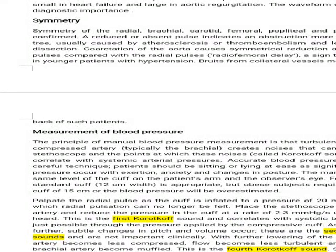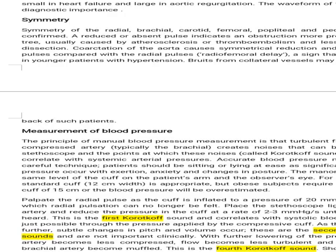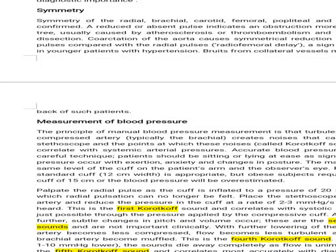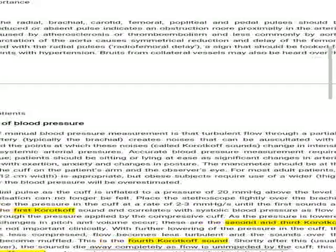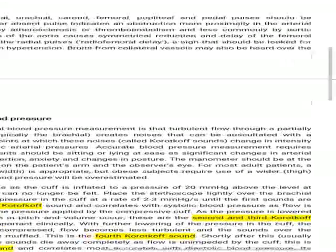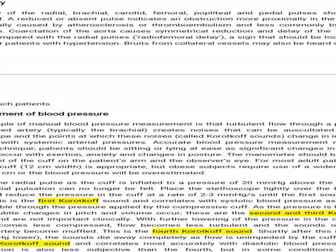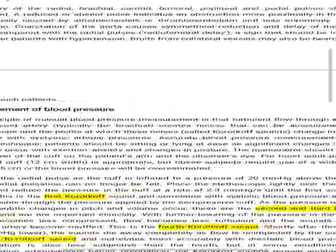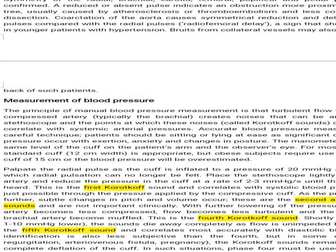Measurement of blood pressure: the principle of manual blood pressure measurement is turbulent flow through a partially compressed artery. Typically the brachial artery creates noise that can be auscultated with a stethoscope, and the point at which these noises — called Korotkoff sounds — change in intensity correlates with systemic arterial pressure. Accurate blood pressure measurement requires careful technique. The patient should be sitting or lying at ease, as significant changes in arterial pressure occur with exertion, anxiety, and change in posture. The manometer should be at the same level as the cuff on the patient's arm and the observer's eye.